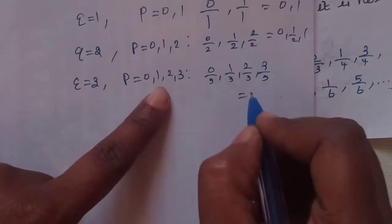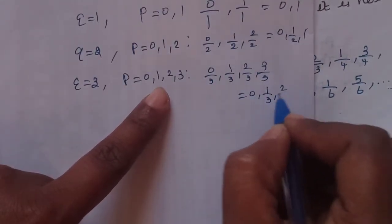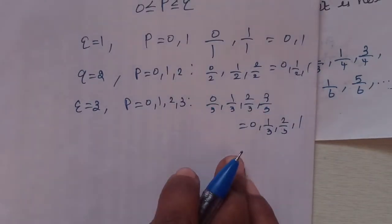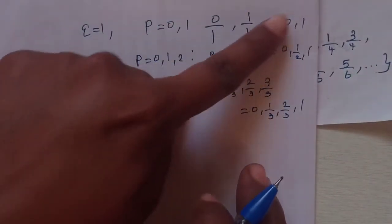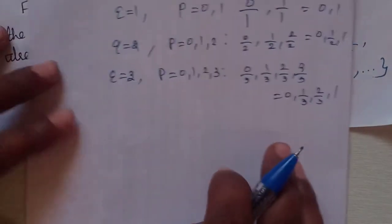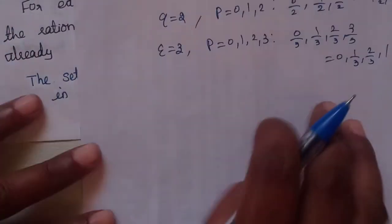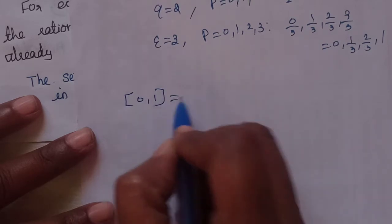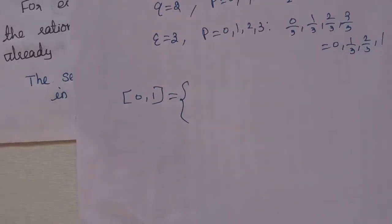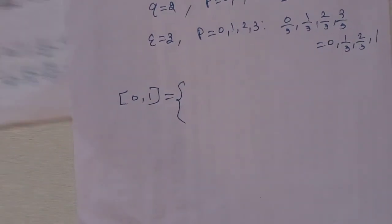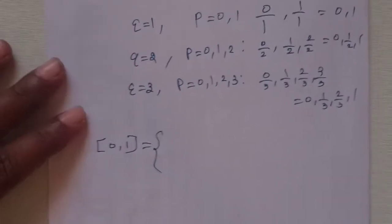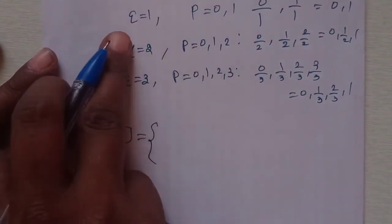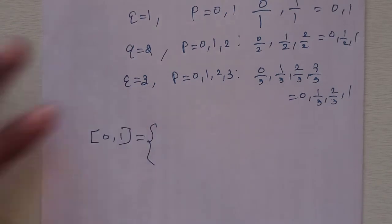So when we read this, we avoid repetition. If a value is repeated, we write it only once. For the set, we write 0, then 1. If a fraction is already present, we skip it. So from Q equal to 1, we write 0 and 1.